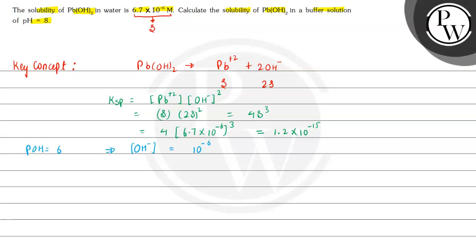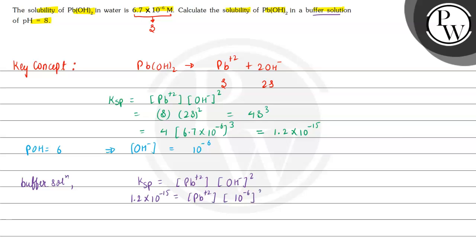Now we can find the solubility of Pb(OH)₂ in the buffer solution. For the buffer solution, Ksp equals the concentration of Pb²⁺ multiplied by the concentration of OH⁻ squared. So 1.2 × 10⁻¹⁵ equals the solubility of Pb²⁺ multiplied by (10⁻⁶)².